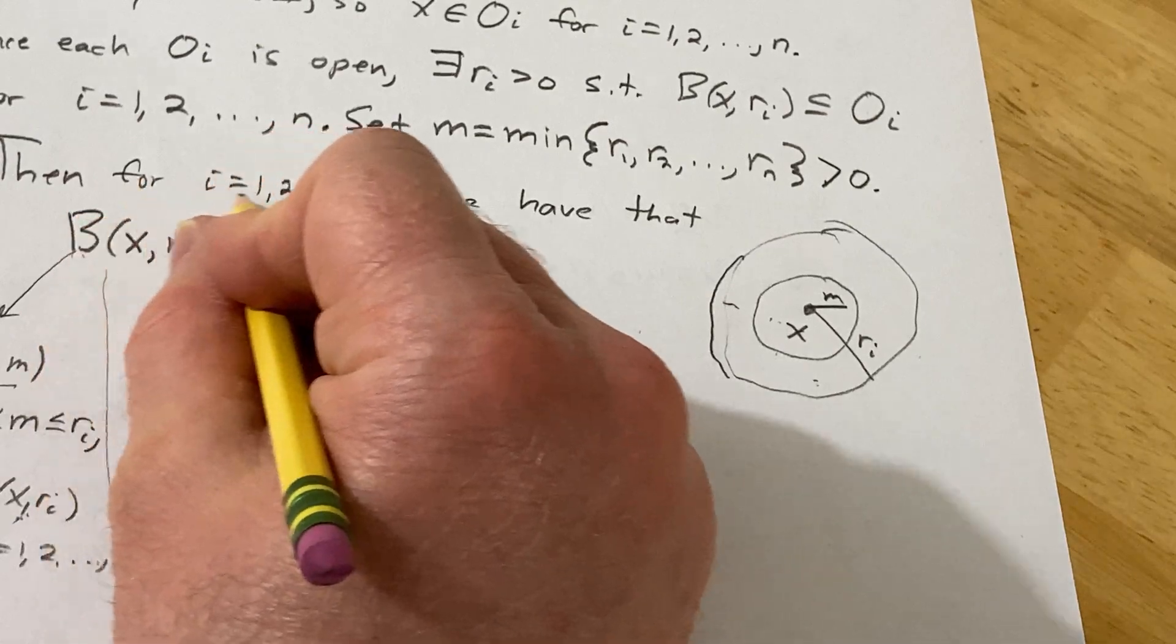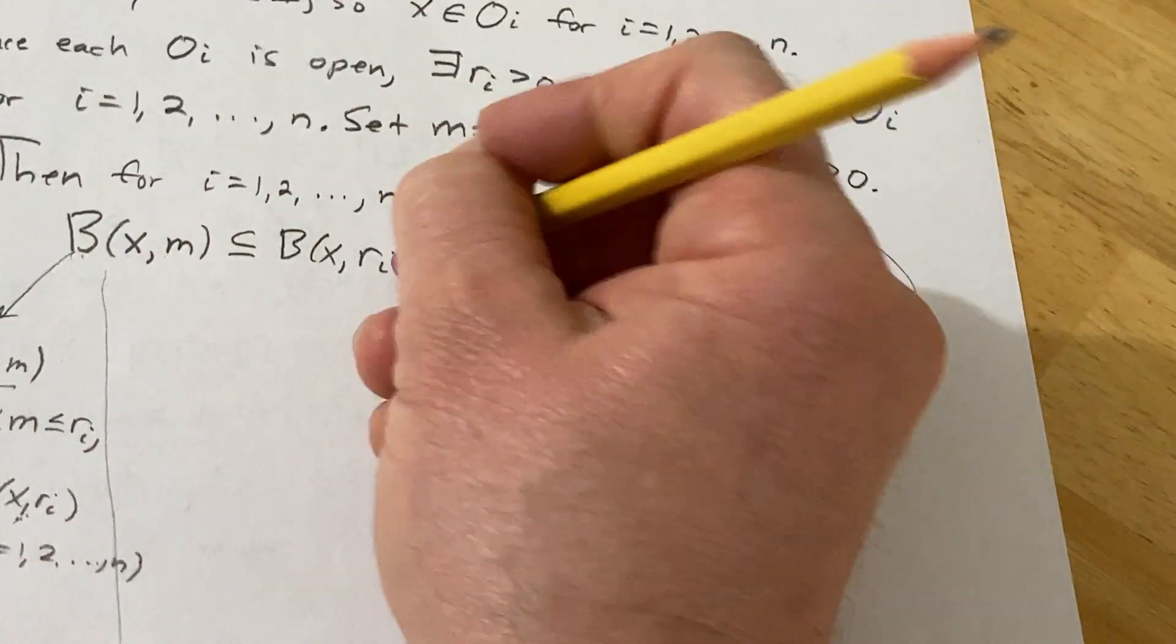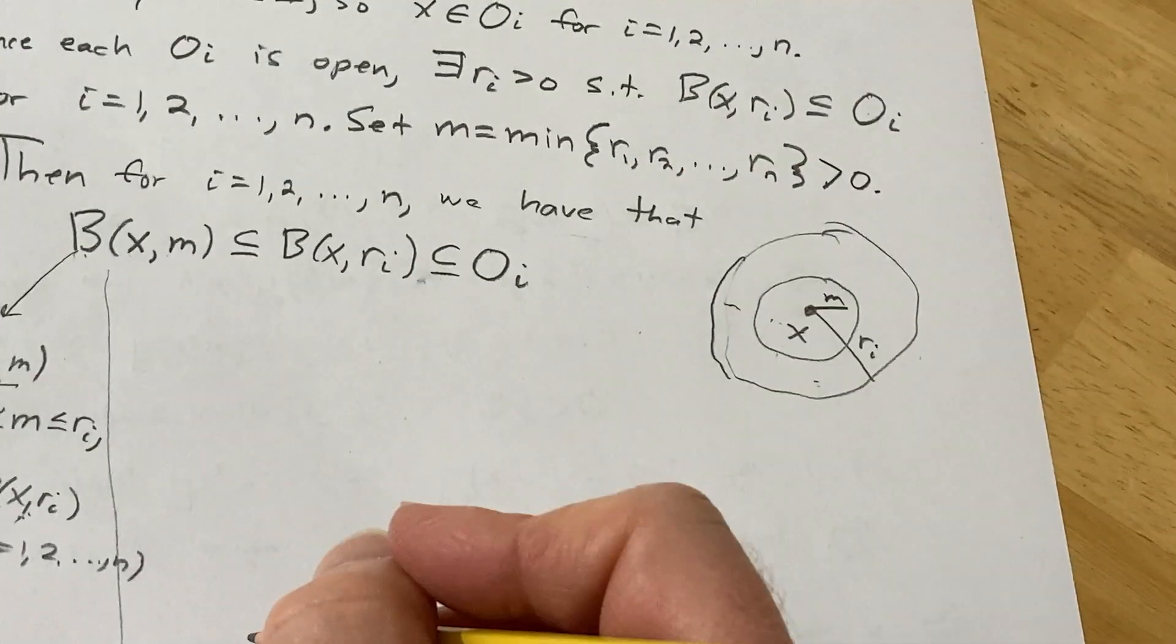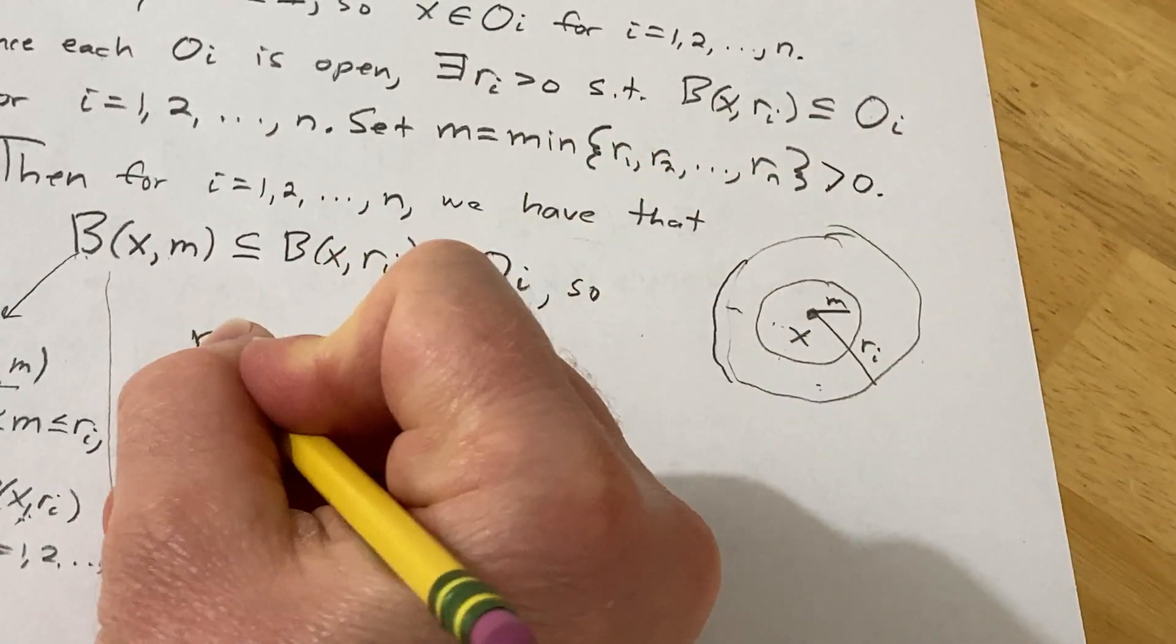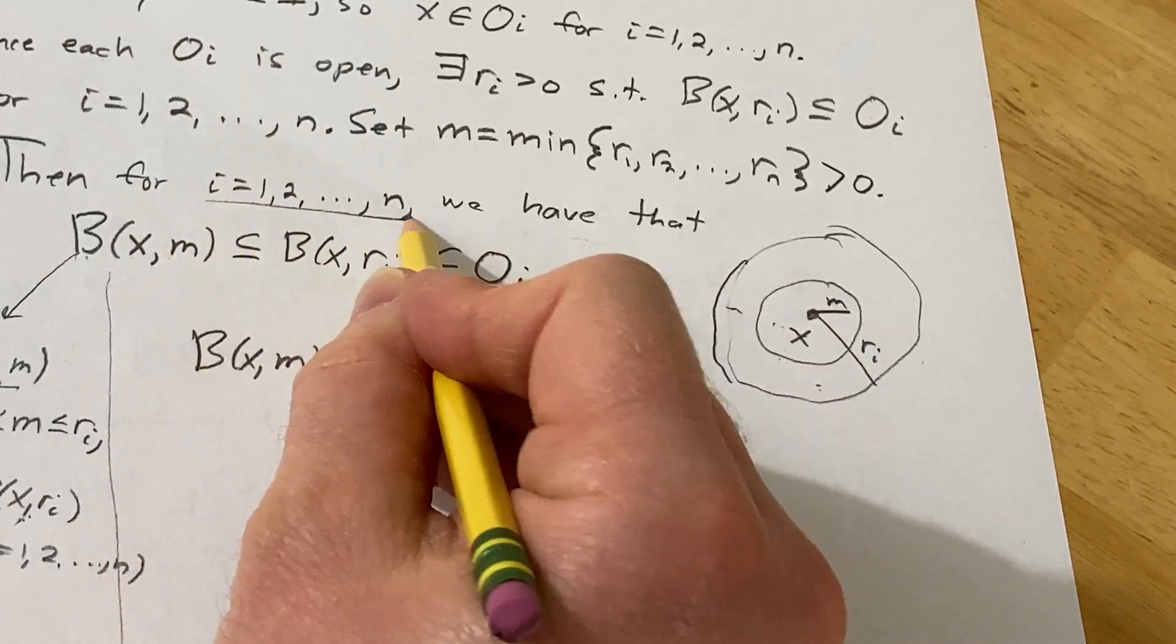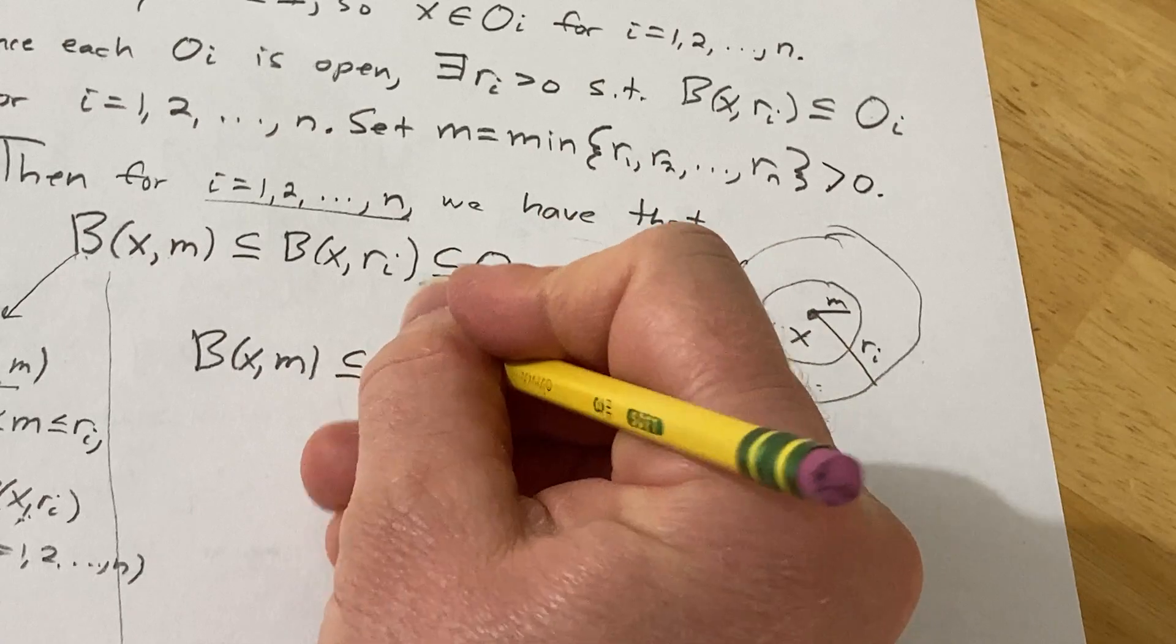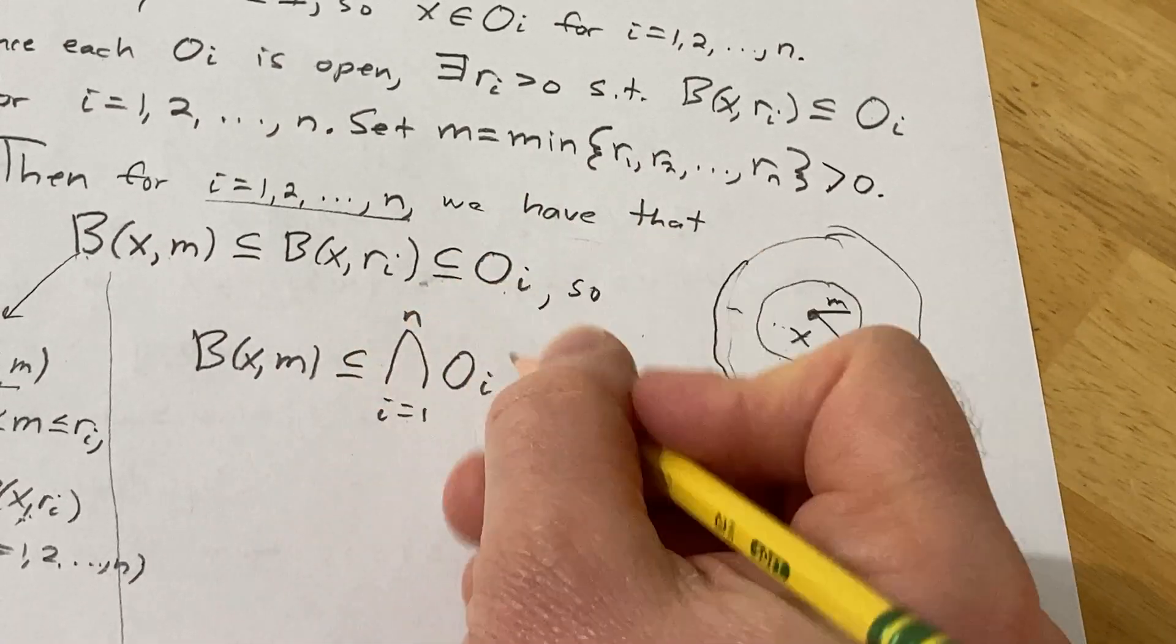So we have that for each i, one through n, we have that this is true. But moreover, this is a subset of Oᵢ. That's really the point we want to make, right? So B(x,m) is a subset of Oᵢ for each i, one through n, so it's a subset of the intersection, which is equal to I.